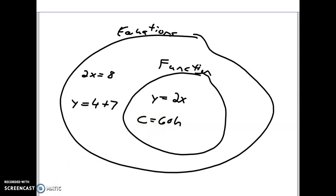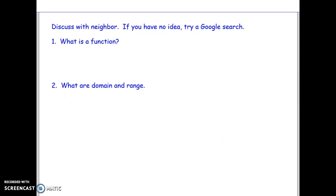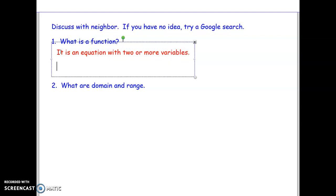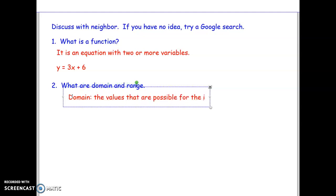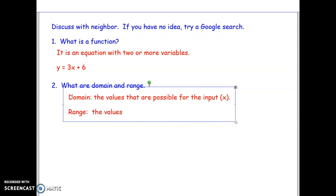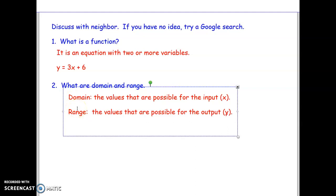For an official definition, a function is an equation with two or more variables, oftentimes x and y — like y equals 3x plus 6. Domain is the values that are possible for the input, which in that example would be x. Range is the values that are possible for the output, which would be y. The best way I can explain domain and range is honestly with a real-life example.